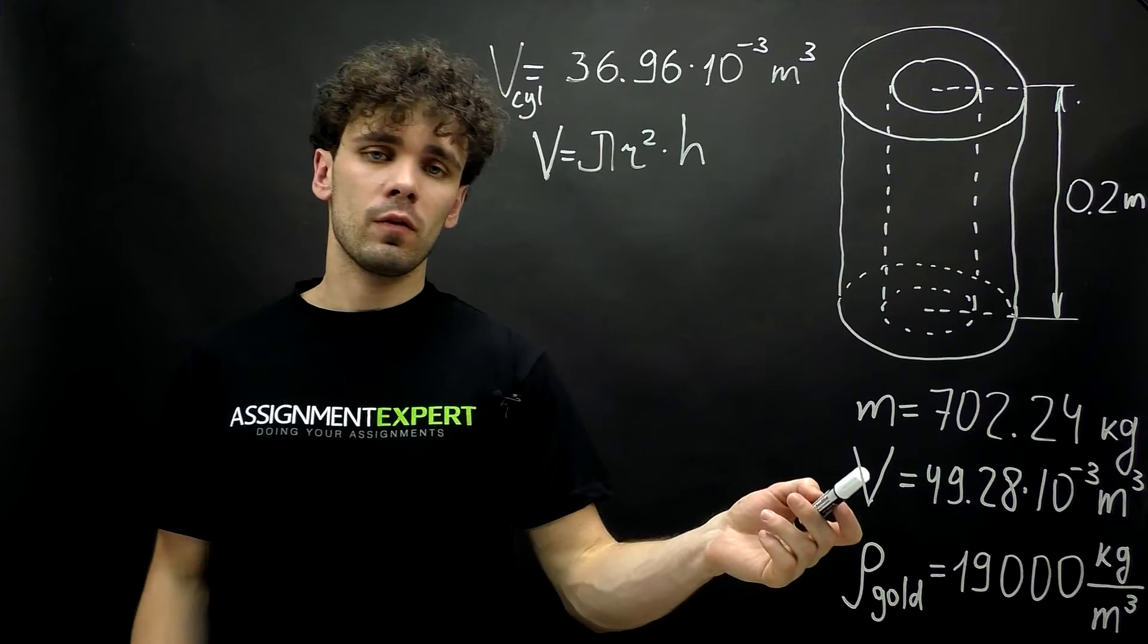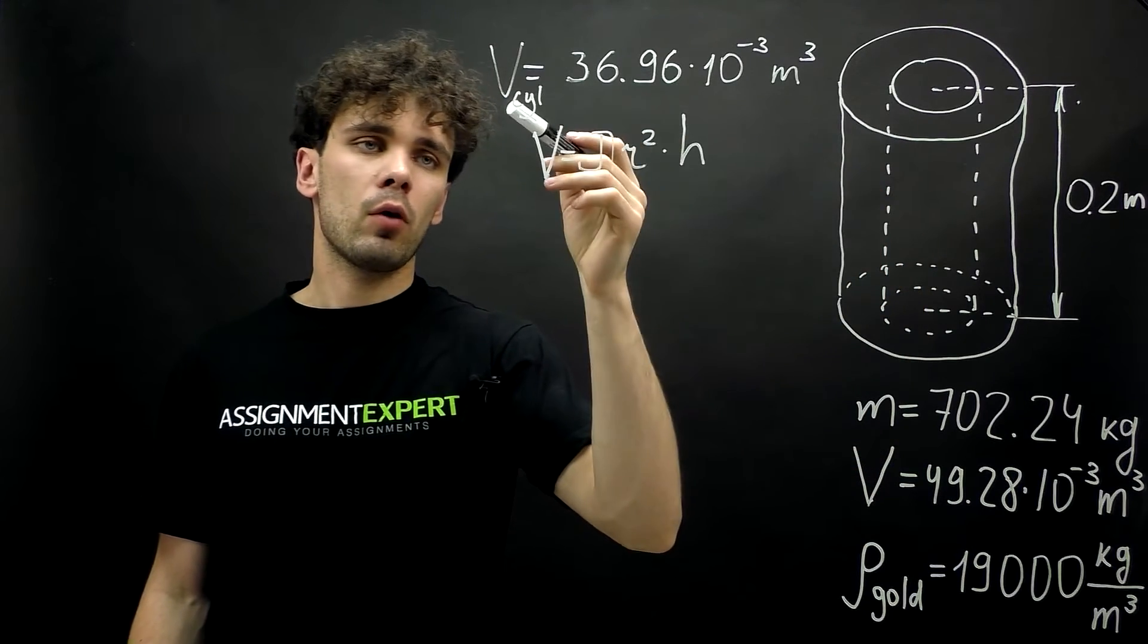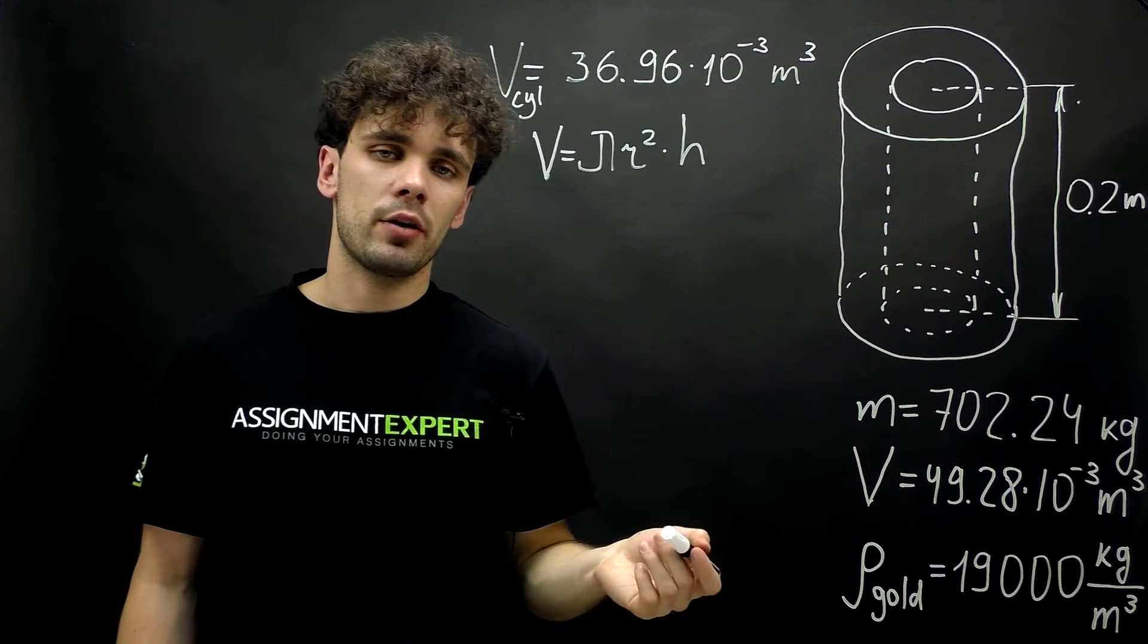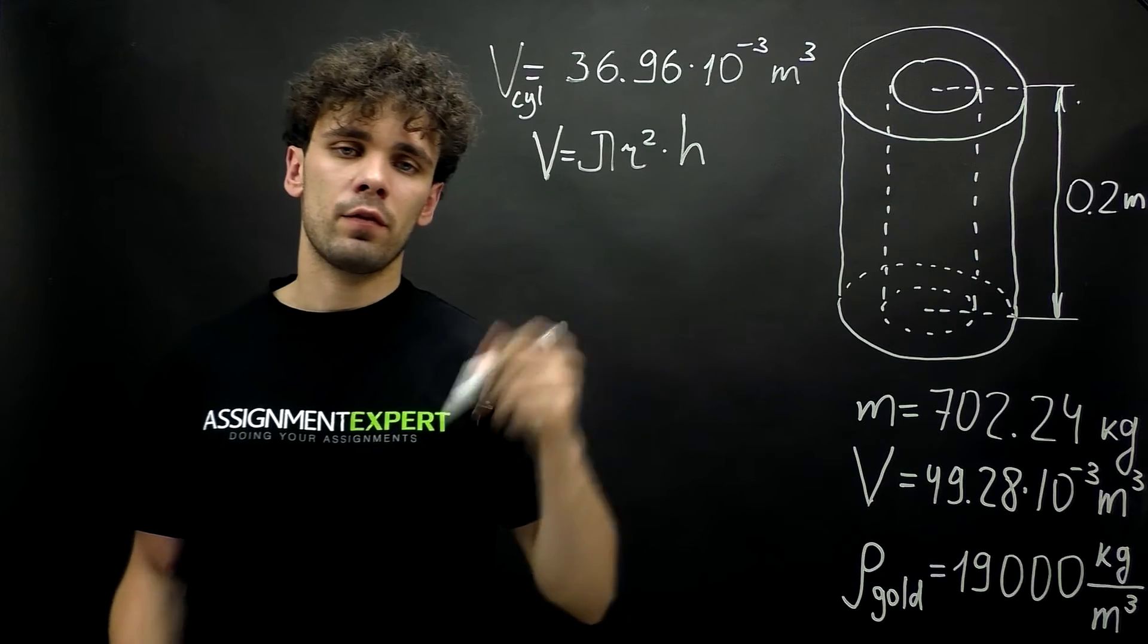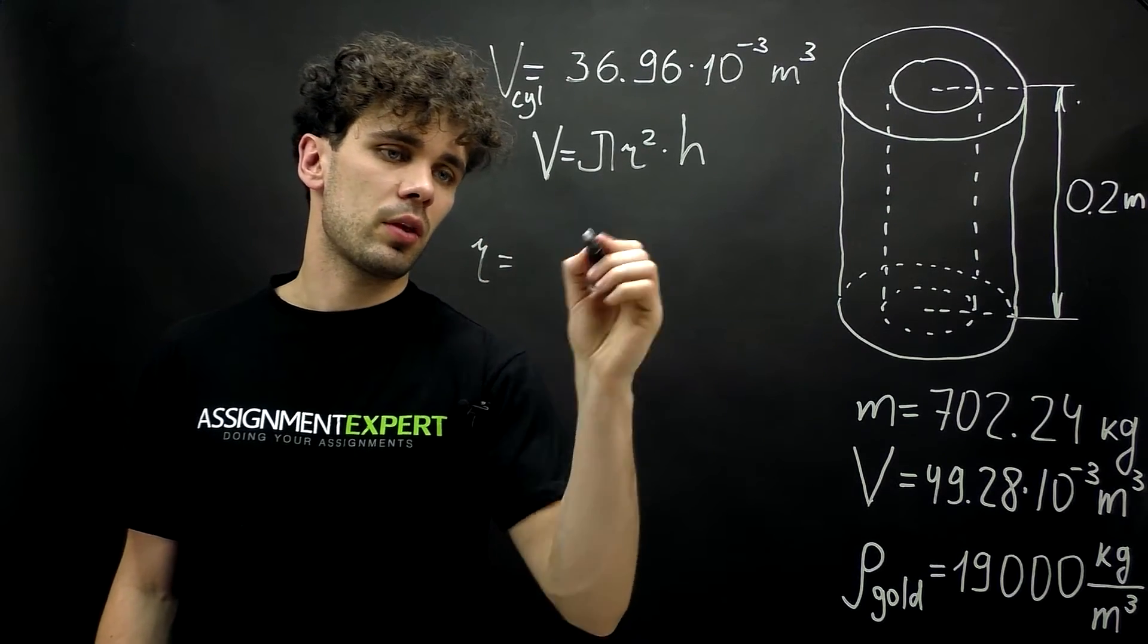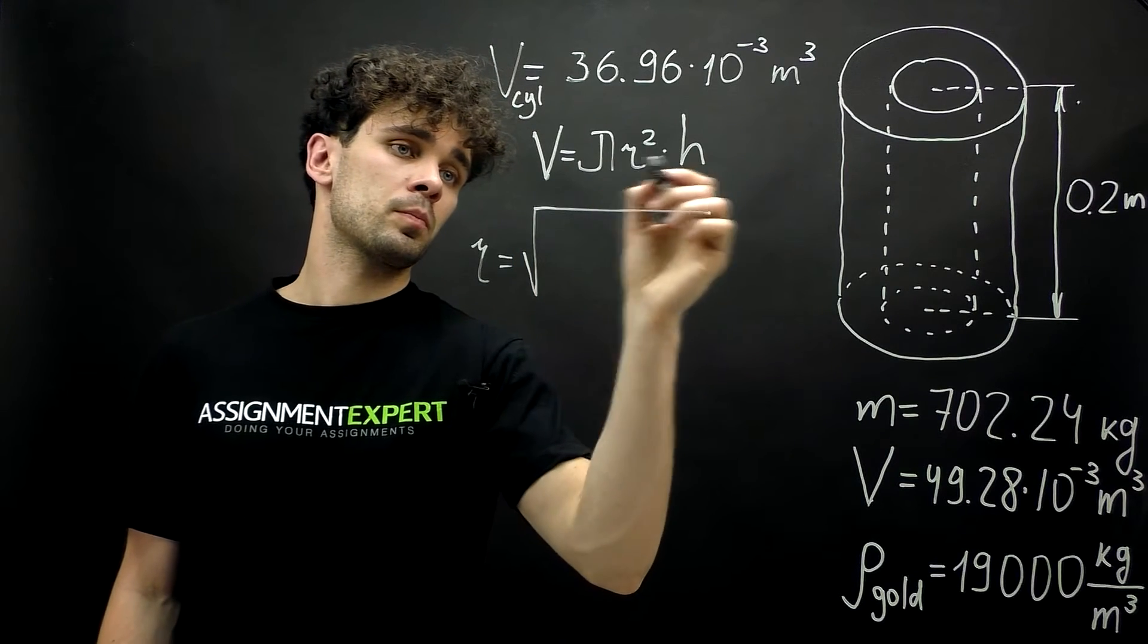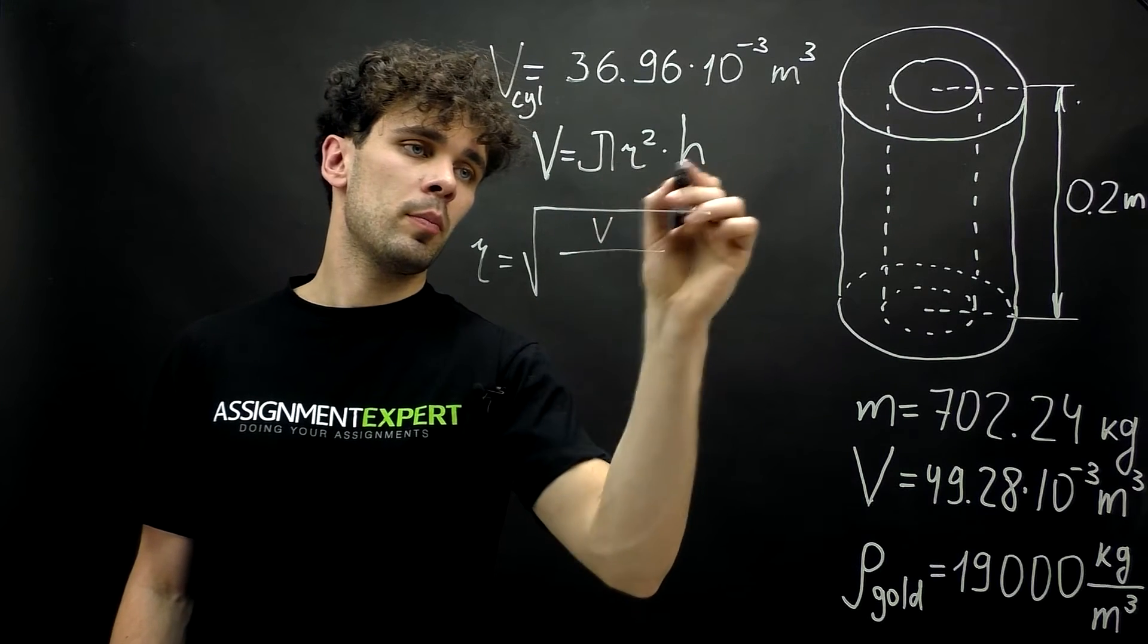So now we have the total volume of cylinder with its inner cavity and the volume of the cylinder without the cavity. How can we find the inner radius? Well, we will return to this formula and derive r from it. r equals the square root of v over pi h.